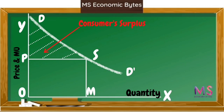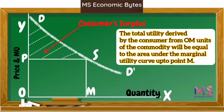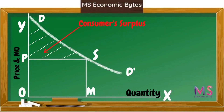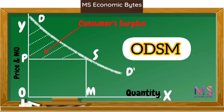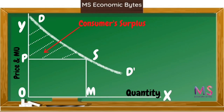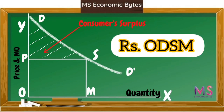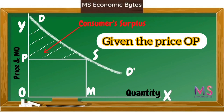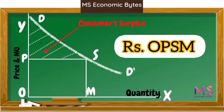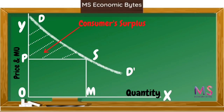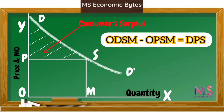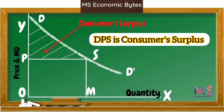In the figure, the total utility derived from OM units equals the area under the marginal utility curve up to point M, which is the area ODSM. For OM units, the consumer is prepared to pay a sum equal to ODSM, but given price OP, the consumer actually pays a sum equal to OPSM. The consumer therefore derives extra utility equal to ODSM minus OPSM, which is the area DPS — the shaded portion of the figure — and this is nothing but consumer surplus.